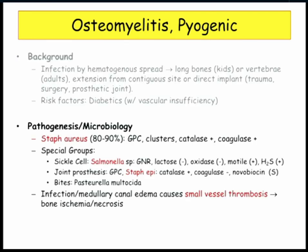The organisms are staph. For osteomyelitis, it's still staph aureus, with the same description of staph. But here, you have to be familiar with the special groups. The only really special group is the patient with sickle cell disease, and that organism is salmonella species. Be familiar with the microbiologic description — that's really the only variant on the theme when it comes to the bugs.